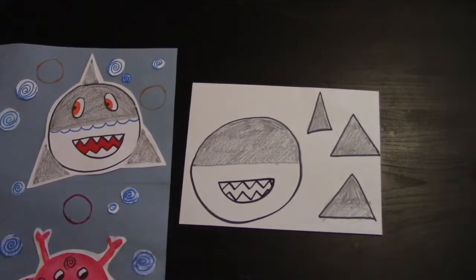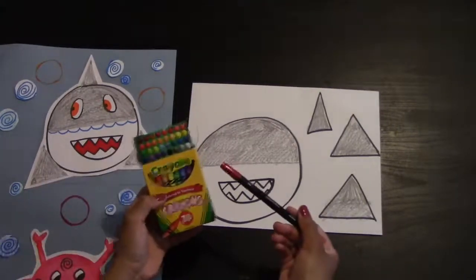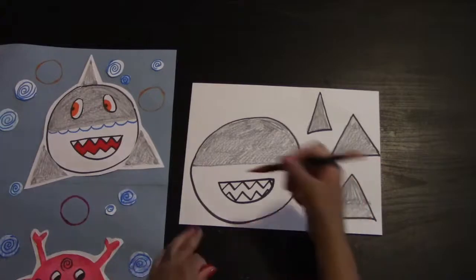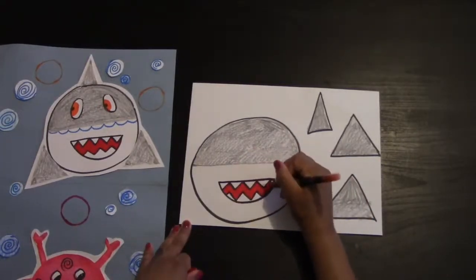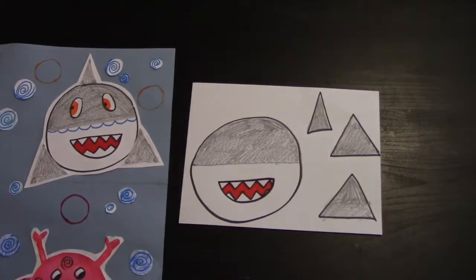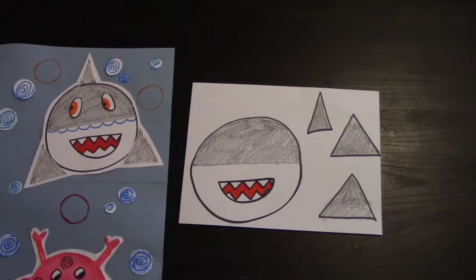After you finish drawing the teeth, you're going to take a red crayon or marker and begin coloring in the rest of his mouth, leaving the teeth white. There you go.